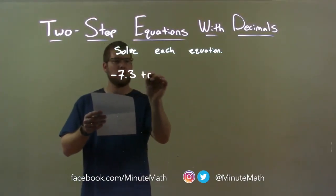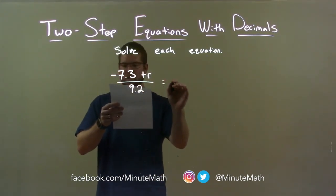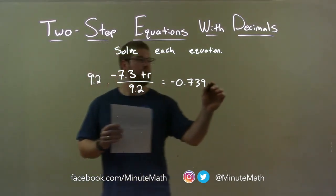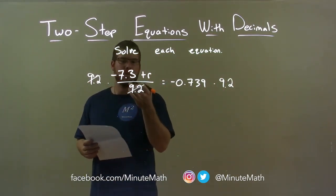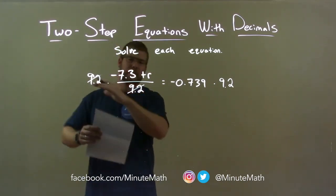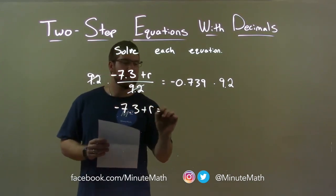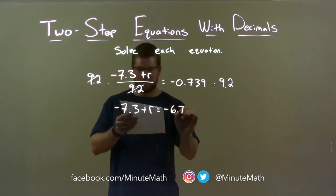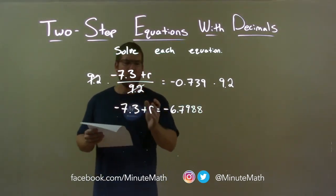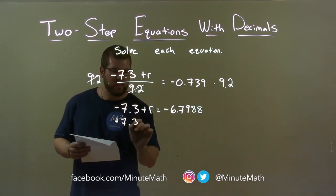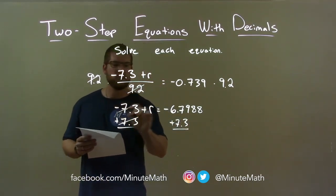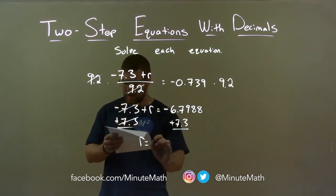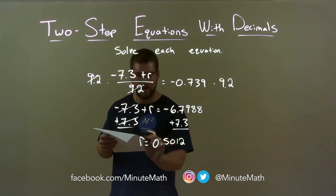Negative 7.3 plus r over 9.2 equals negative 0.739. First thing I want to do is multiply 9.2 to both sides. The 9.2 will eliminate on the left because it's divided by 9.2 — multiplying by 9.2 is the opposite, they cancel each other out. We have negative 7.3 plus r left over on the left. On the right, negative 0.739 times 9.2 is negative 6.7988. Now I want to get r by itself — we have negative 7.3, so if I add 7.3 to both sides, the 7.3 cancels, giving me r by itself. On the right, negative 6.7988 plus 7.3 is 0.5012. And there we have our final answer.